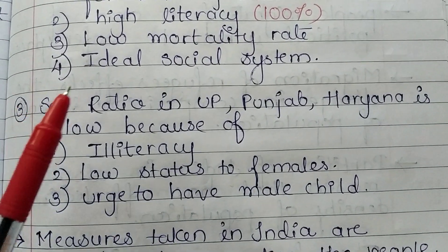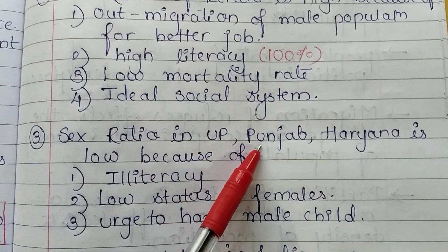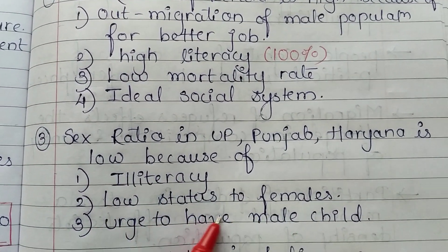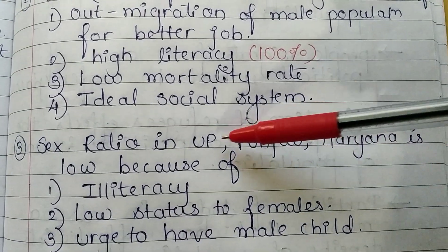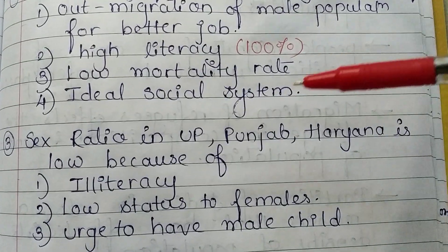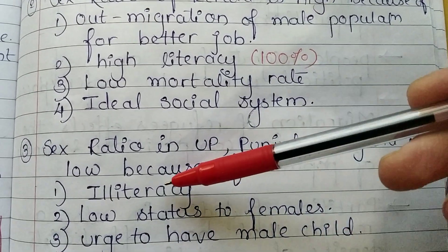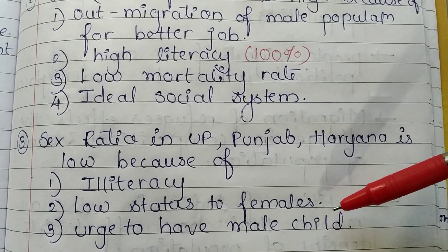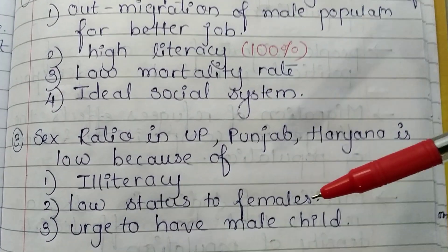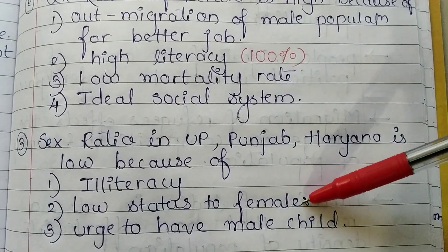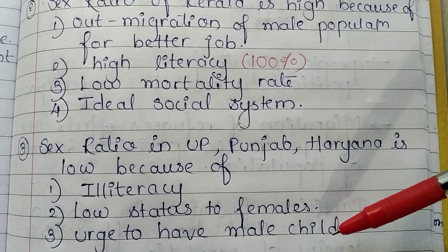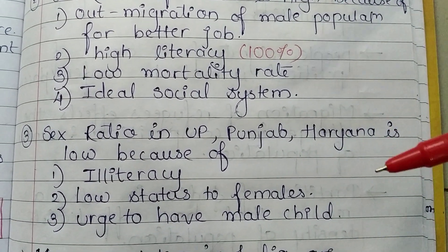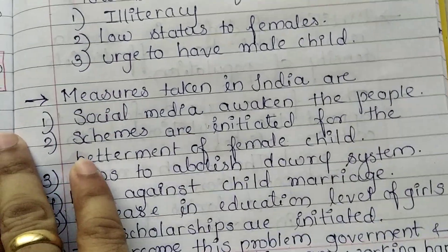The sex ratio in Uttar Pradesh, Punjab, and Haryana is low because of illiteracy, low status given to females, and an urge to have a male child. People are not properly educated, females are not given priority and are considered of low status, and the belief that a male child is superior leads to a preference for male children, increasing population imbalance.